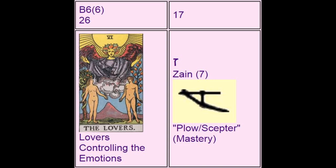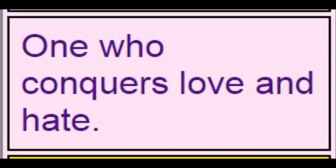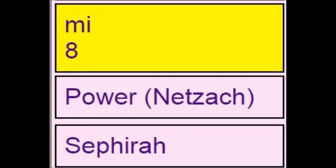The meaning of the Lovers is that in the food octave of Gurdjieff one has to pass from the note Sol to the note La. This point is very important because it is an intentional actuator, and to have the ability to pass to this point is the most important thing one could do. Gurdjieff refers to this as Partkdolg-duty, and if you think about it, it is love that makes you feel there is something higher than the physical plane. The statement: 'one who conquers love and hate.' The sephirah related to this is Mi, which is power, Netzach.